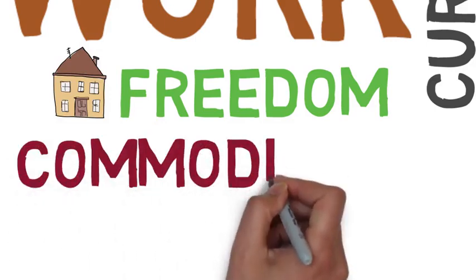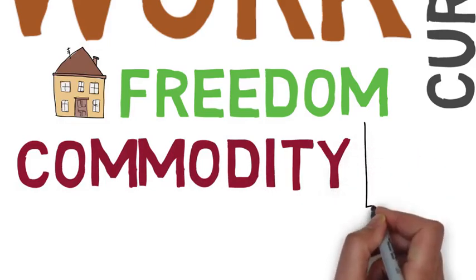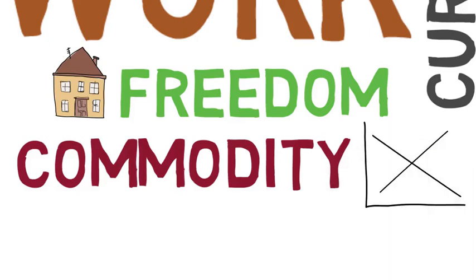The third way of thinking about work is as a commodity. When work is a commodity, it's seen as an abstract quantity of some kind of productive effort that has tradable economic value. So it's governed maybe by the laws of supply and demand.